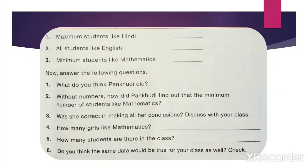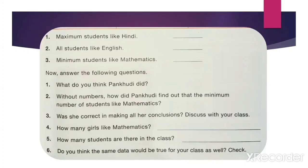The first conclusion is: Maximum students like Hindi. Maximum means more. Yes, it is correct — maximum students like Hindi, so put a tick. Next: All students like English. See the English box — 8 students like English. This conclusion is wrong, because some students are in Hindi and some in Mathematics. The third conclusion: Minimum students like Mathematics — this conclusion is correct, because 7 is the lesser number compared to 9.